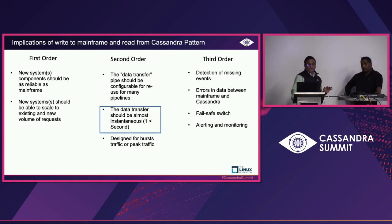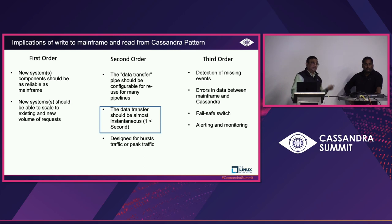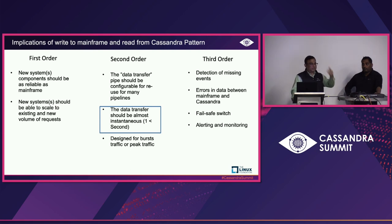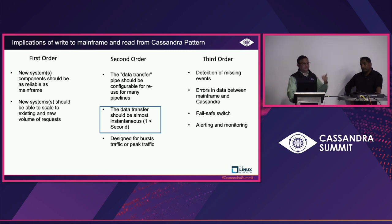For this whole thing to be meaningful, when an event happens in the mainframe, it must reach Cassandra in less than one second. If you change an address in the mainframe and go back to see it, you want that address to be reflected immediately. Same with transactions — when you swipe a card today, customers look at it immediately. If the data is in Cassandra with even a 10-second delay, you're degrading the customer experience. We didn't want any degradation of what customers have today.